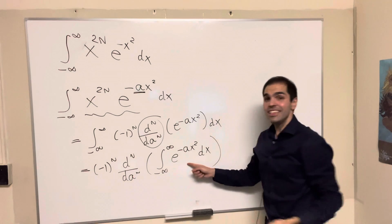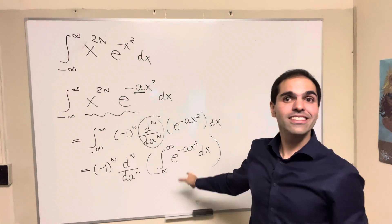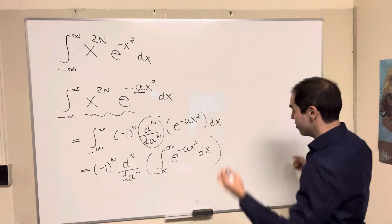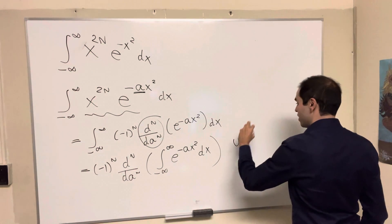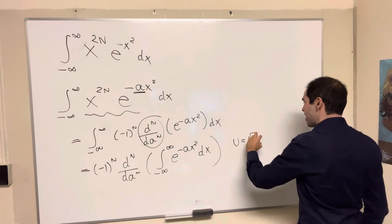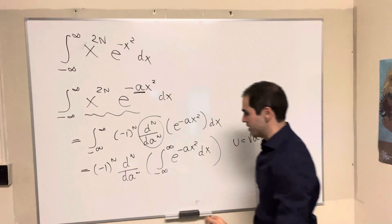But look, this integral we can evaluate explicitly, because this is just a Gaussian integral. But more precisely, after u sub, I think if you do u is square root of ax, here a is positive.